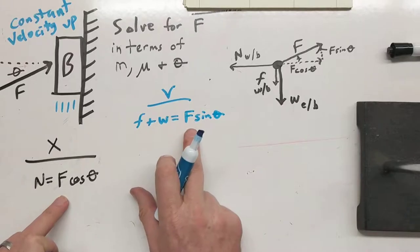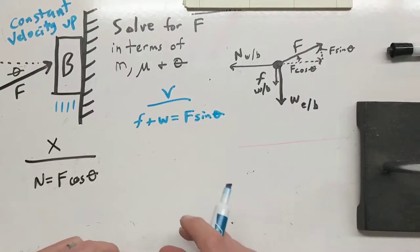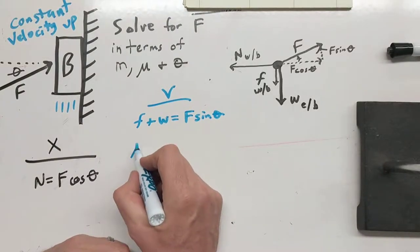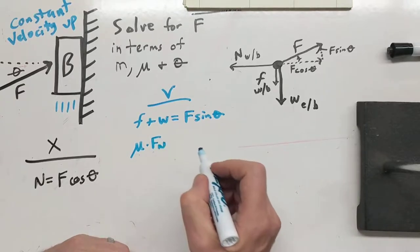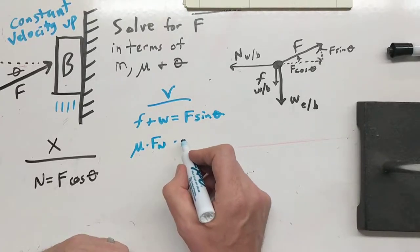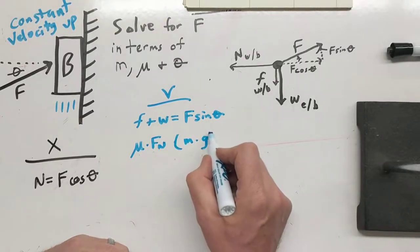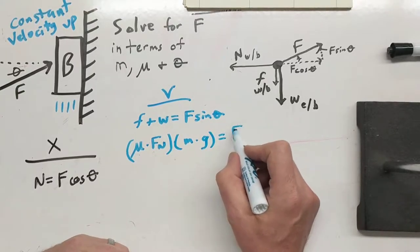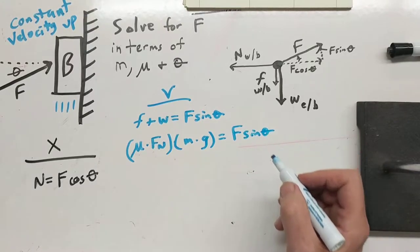So now we've got F in variables we all know, so we can push these together to make it work. So how much is the force of friction? Friction we know is mu times the normal force, and the weight is just mass times gravity, and then F is what we're looking for, sine theta. So those have to be equal.